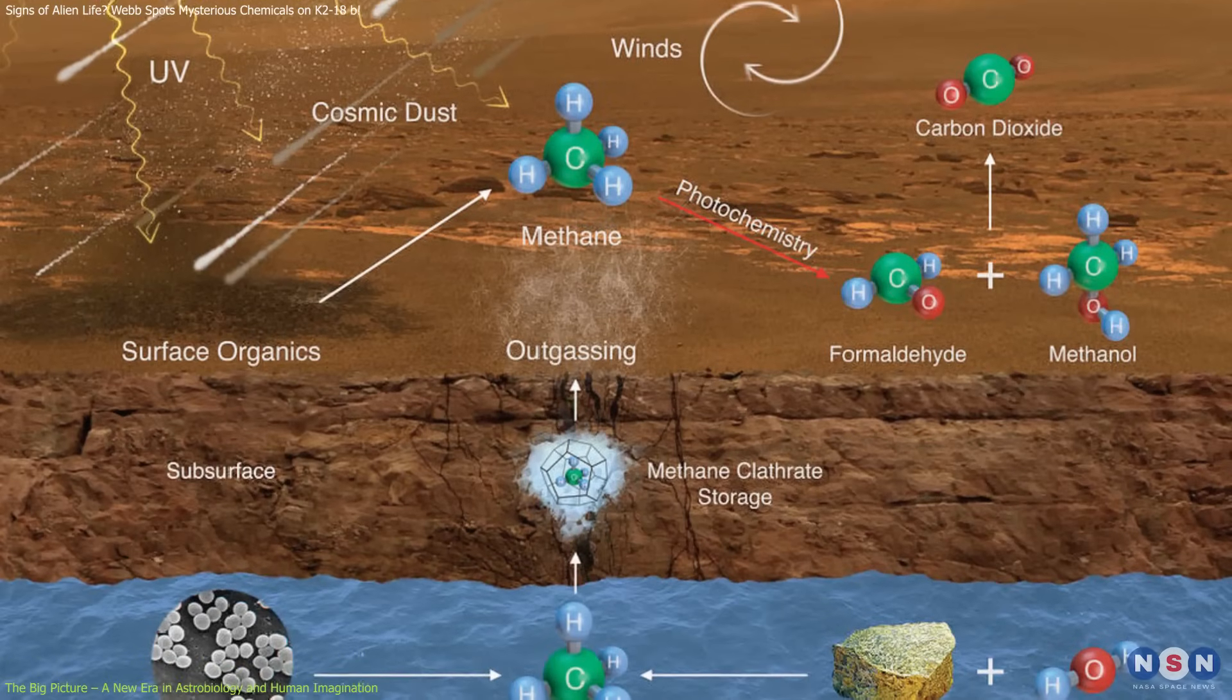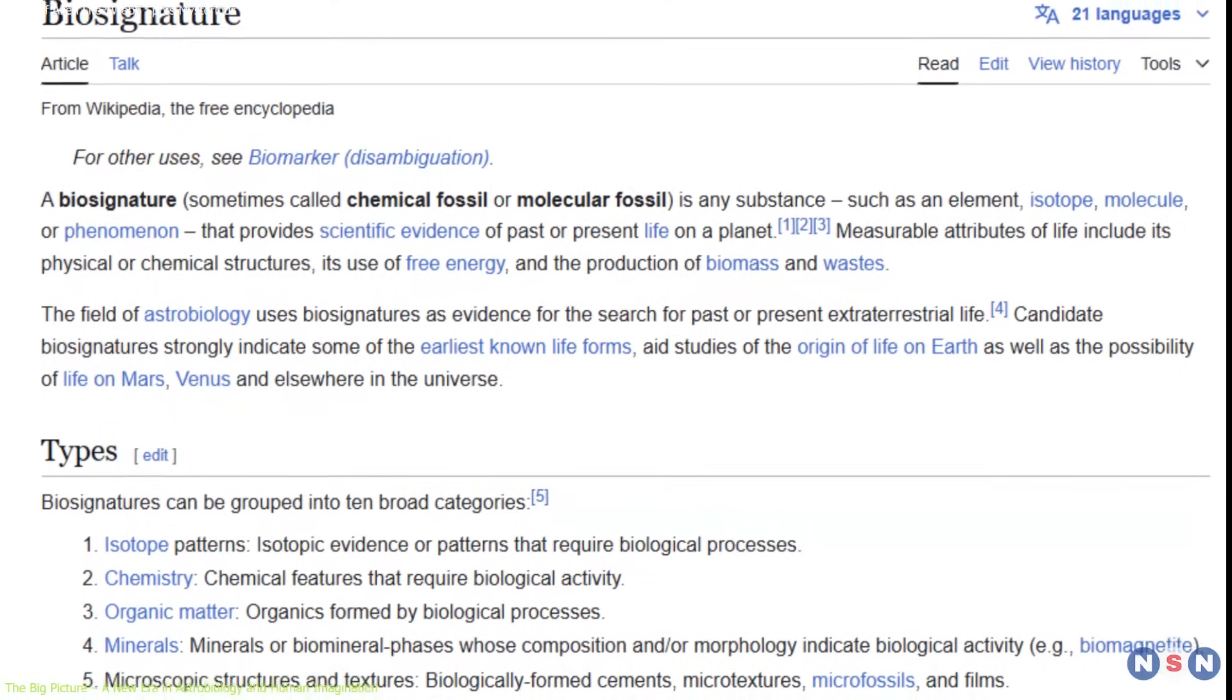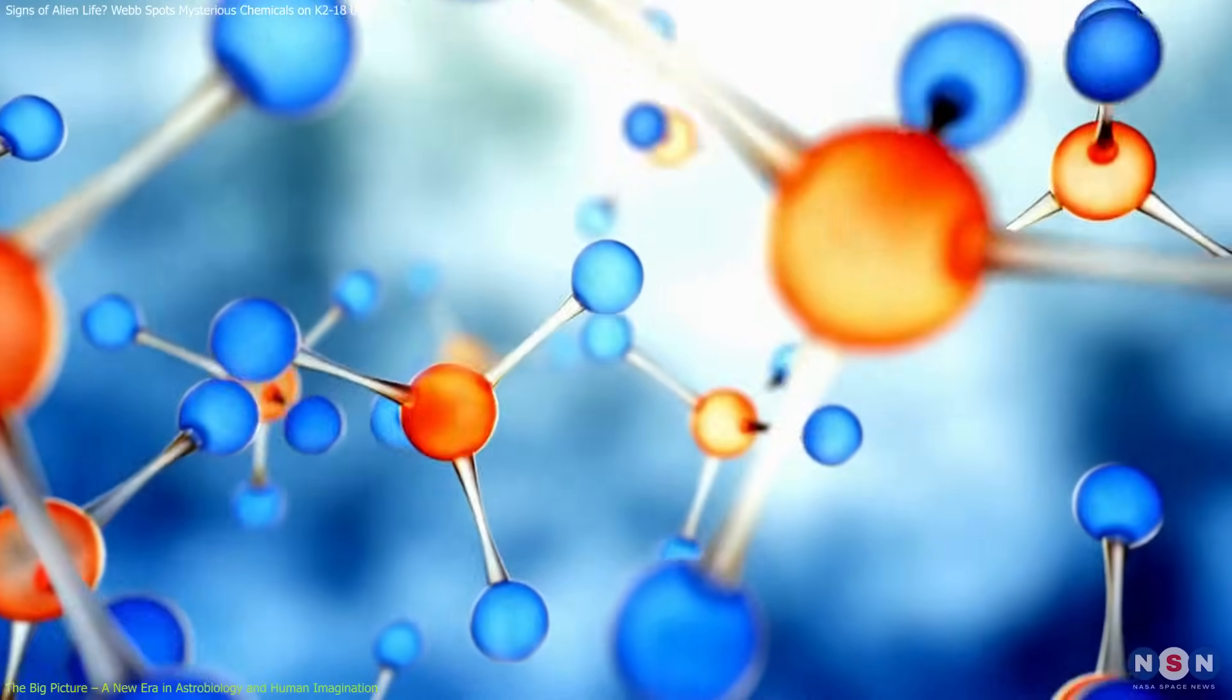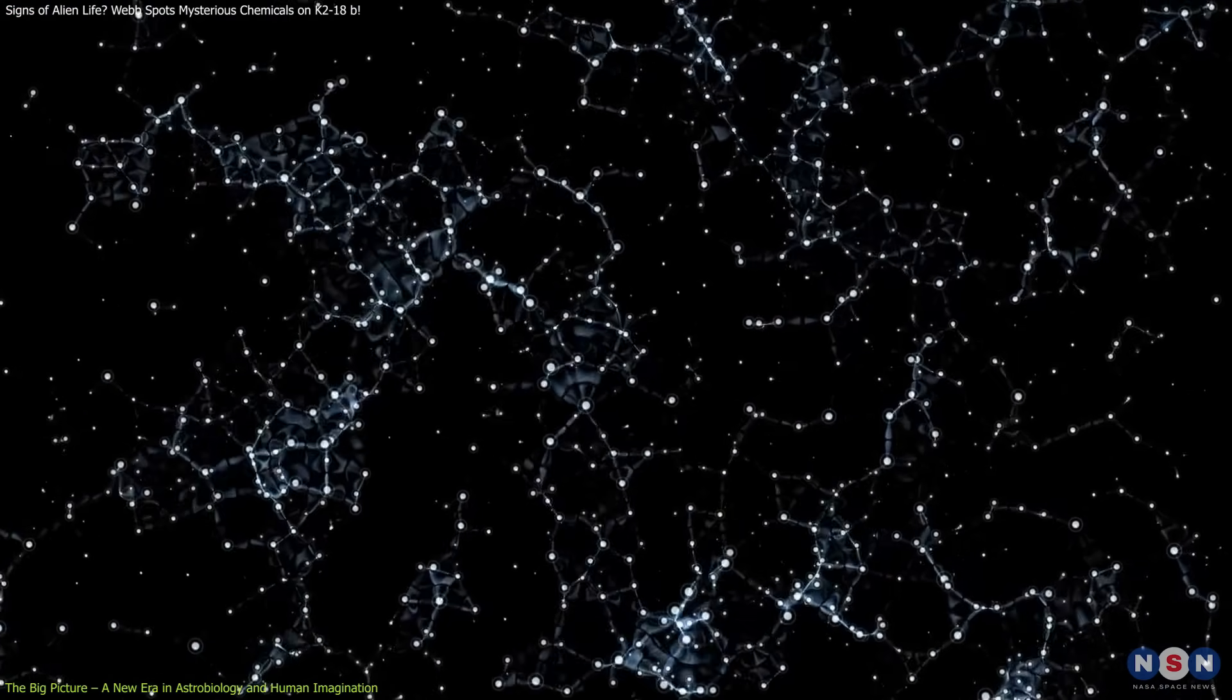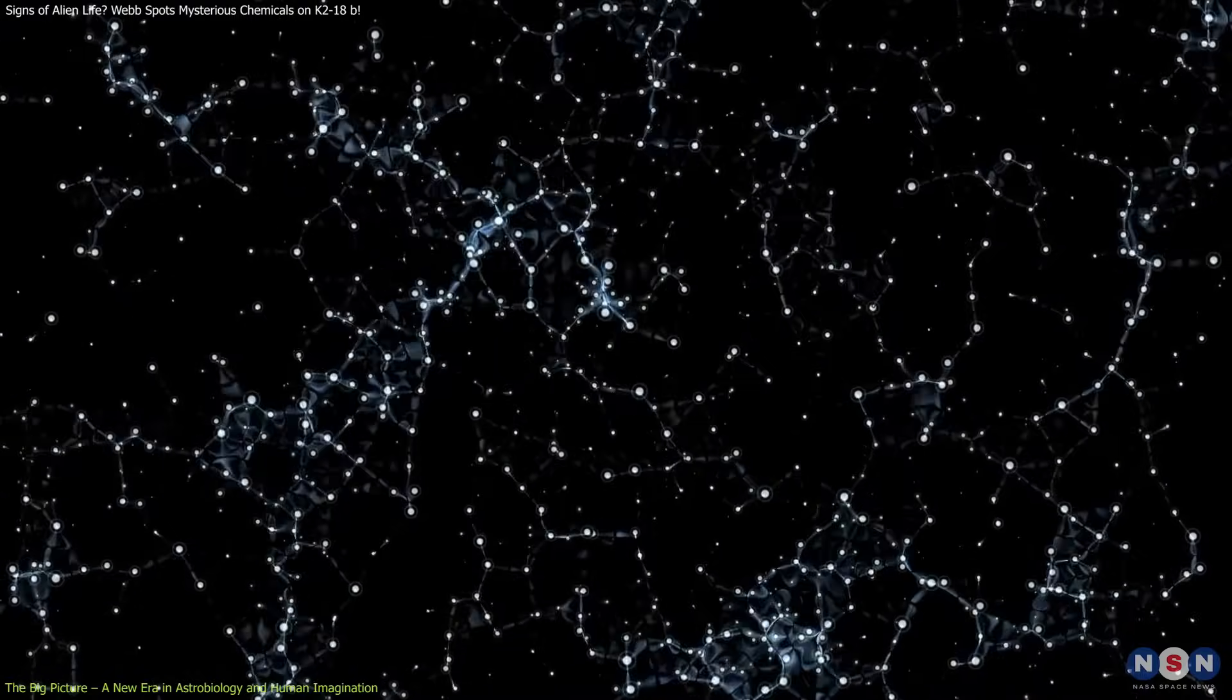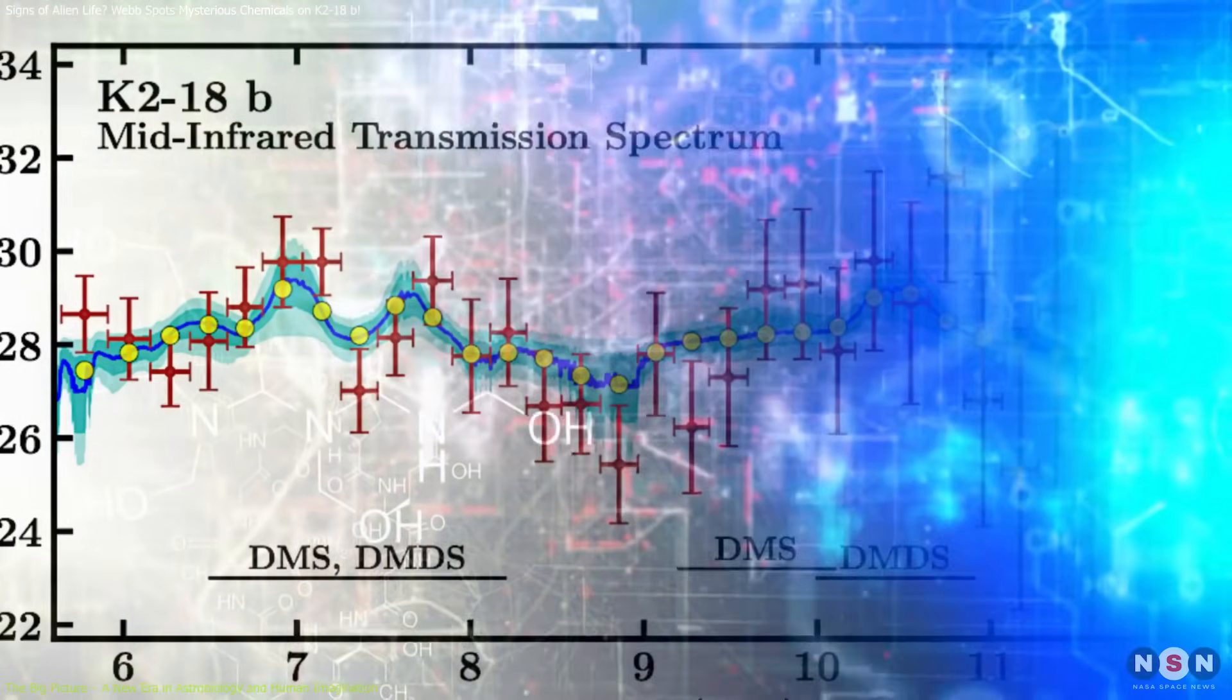Central to this exploration is the understanding of biosignatures—measurable substances that suggest biological activity. Scientists don't just look for a single molecule like DMS. Instead, they evaluate its context, its concentration, how it interacts with other gases, and whether it forms part of a chemical imbalance that can't be easily explained by nonliving processes.